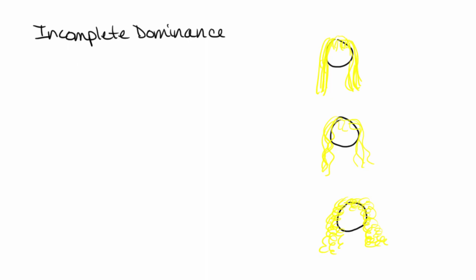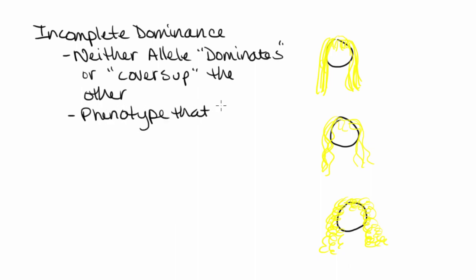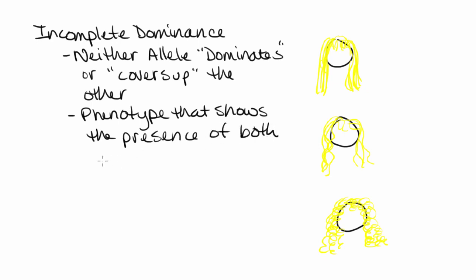Incomplete dominance is a specific type of dominance that applies to certain genes. With incomplete dominance, neither allele dominates — in other words, neither allele covers up the other. So there's not going to be a true dominant or true recessive allele. This means we're going to get a phenotype that shows the presence of both alleles, which is what we see in the heterozygous individual.